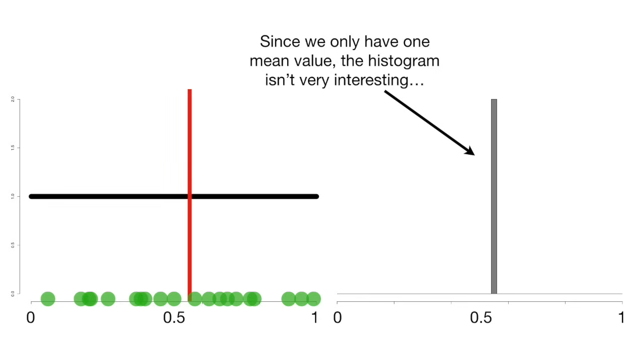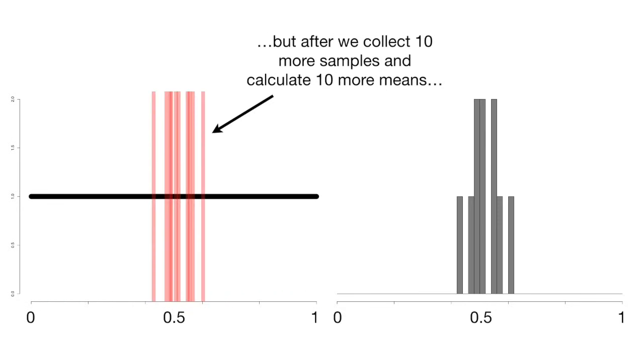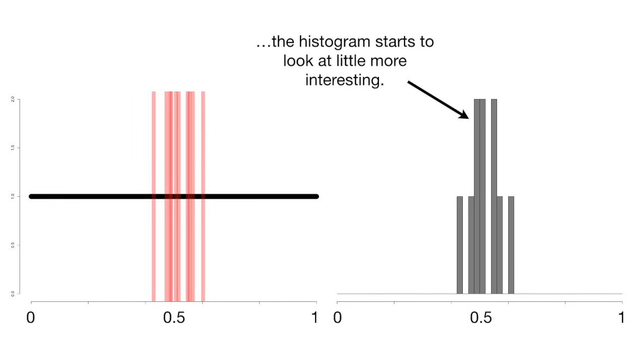Since we only have one mean value, the histogram isn't very interesting. But after we collect 10 more samples and collect 10 more means, the histogram starts to look a little more interesting.